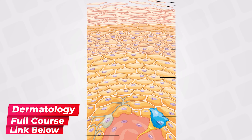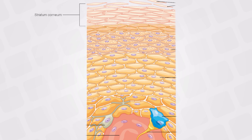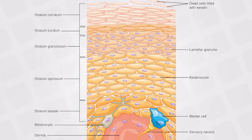The epidermis itself is subdivided into more layers. From top to bottom we will see: stratum corneum, then stratum lucidum, then stratum granulosum, then stratum spinosum, and finally stratum basalis.